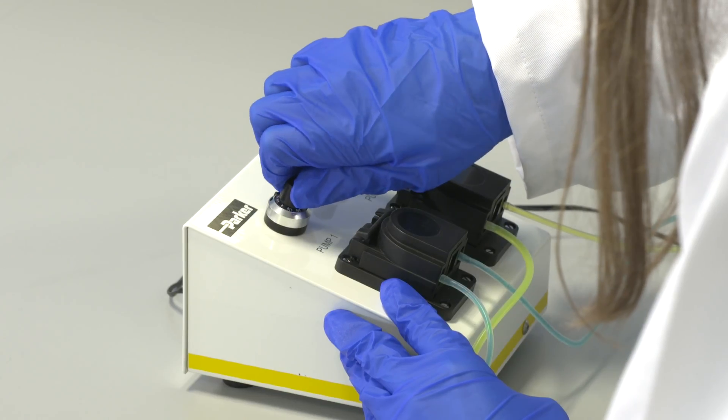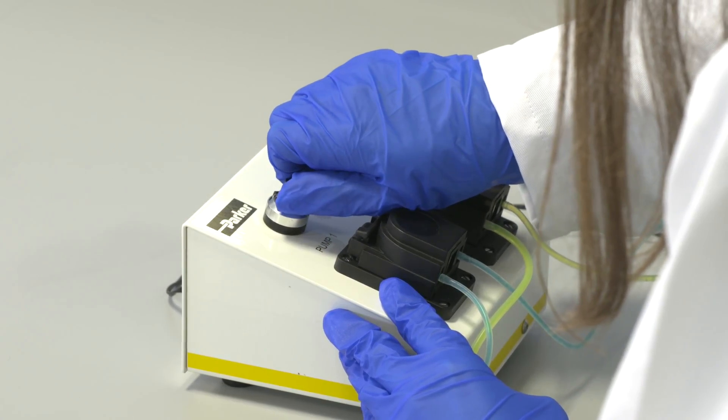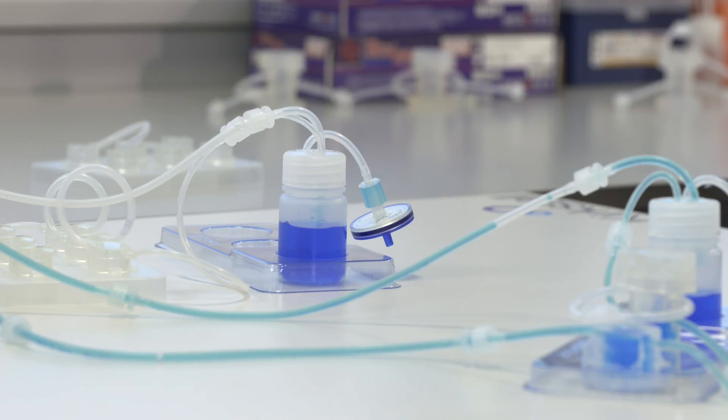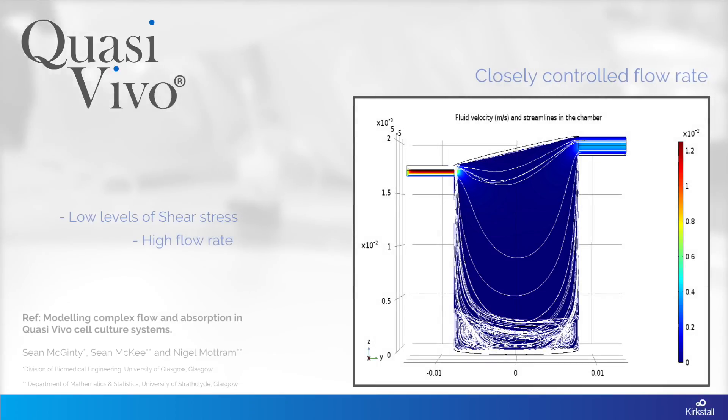The flow rate of the media is easily adapted by changing the settings on your peristaltic pump to ensure that the media perfuses cells at the correct level. The chamber geometry ensures low levels of shear stress are applied to the cells within the chamber using relatively high flow rates as delivered by the pump.